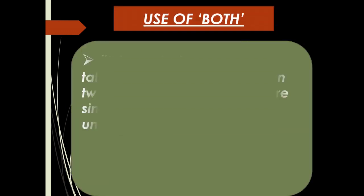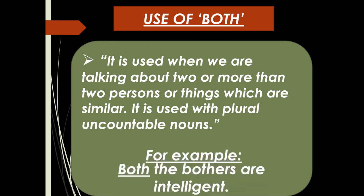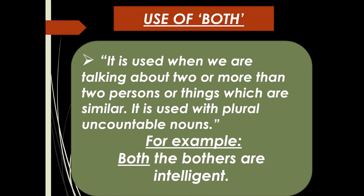Use of 'both': 'Both' is used when we are talking about two or more than two persons or things which are similar. It is used with plural uncountable nouns. For example: 'Both the brothers are intelligent.' When two things or persons are similar to each other, we use 'both'.